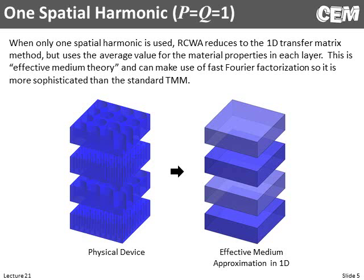There's a whole bunch of papers that approach effective medium theory from this perspective. They develop a Fourier space mathematical formalism, retain only one or sometimes two spatial harmonics, and derive effective material properties from that. So when we use only one spatial harmonic, this really means we're just going with the average value.